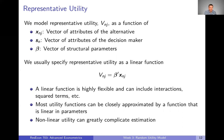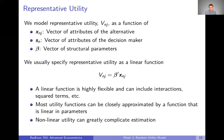Let's dig a little deeper into representative utility. We model representative utility, capital V, as a function of a vector of attributes of the alternative, a vector of attributes of the decision maker, and that's where the structural parameters come in. There's going to be a vector of structural parameters that is part of our model of representative utility. Oftentimes, and certainly in this class, we're going to specify representative utility as a linear function. We can write it as V equals beta times x, where x represents all data — attributes of the alternative or the decision maker collapsed into one vector.